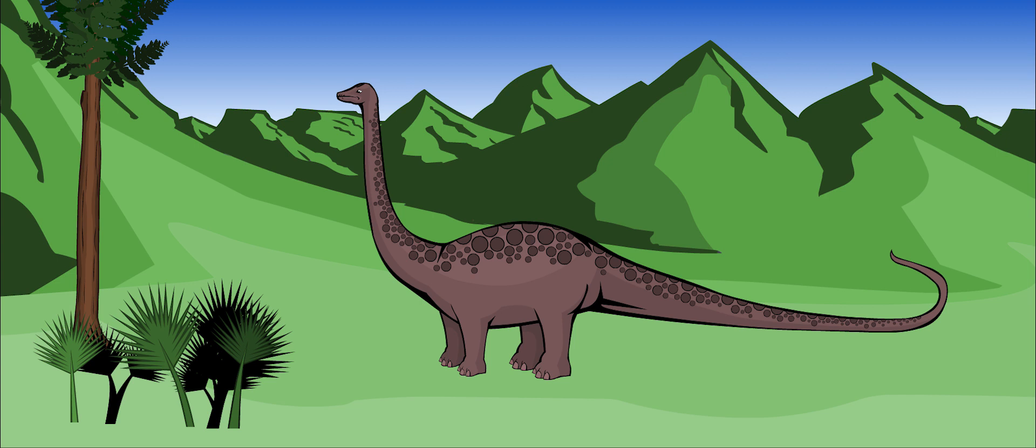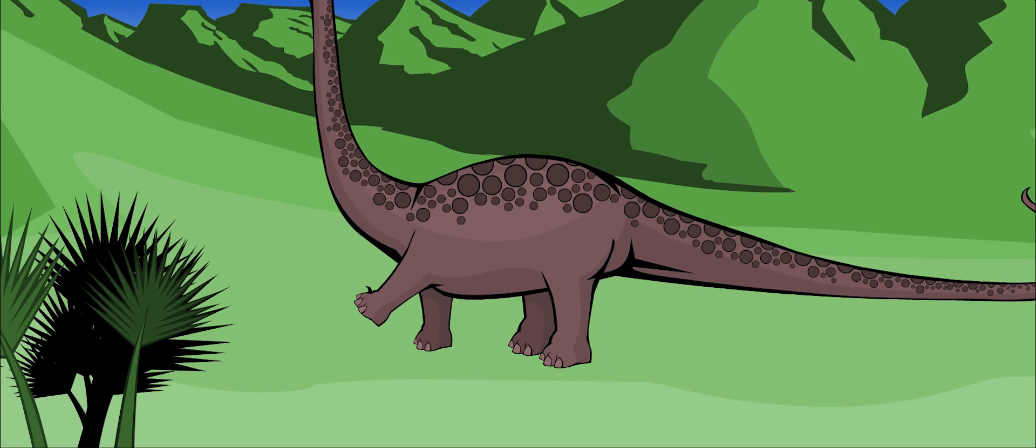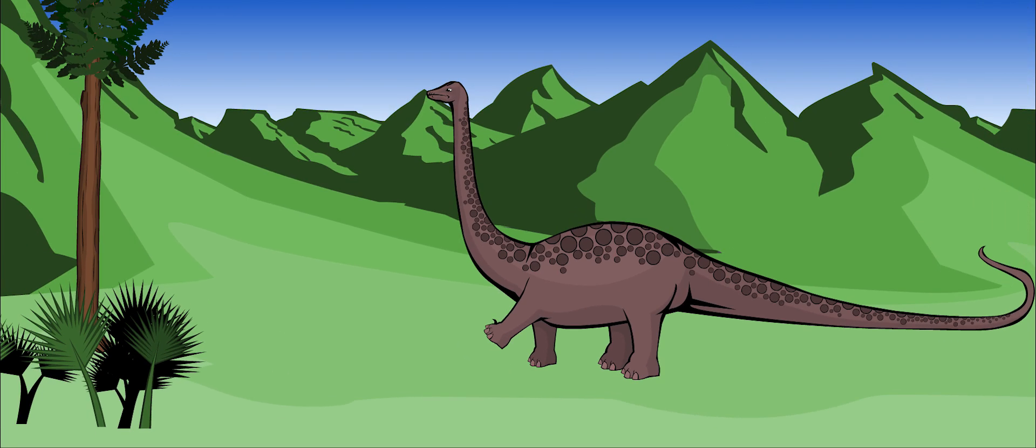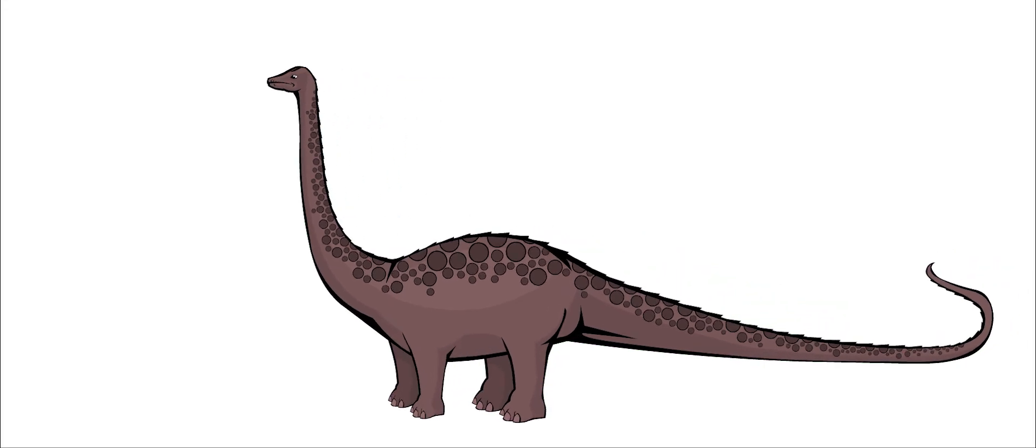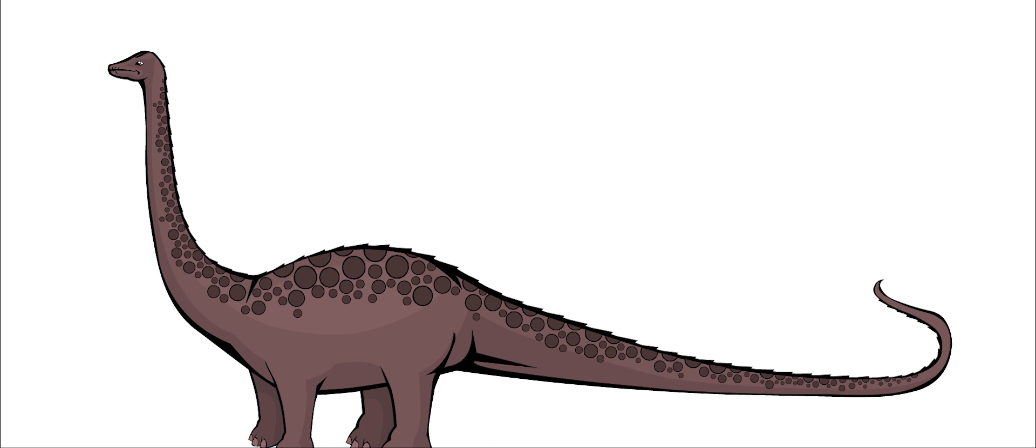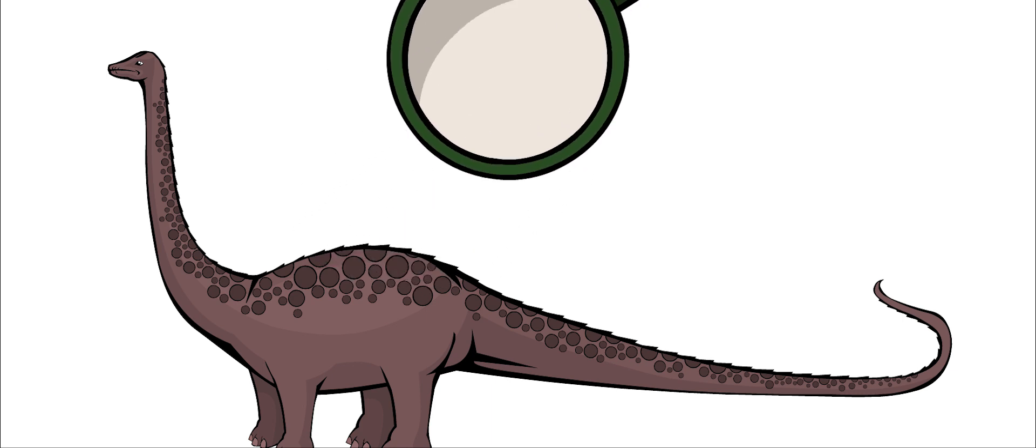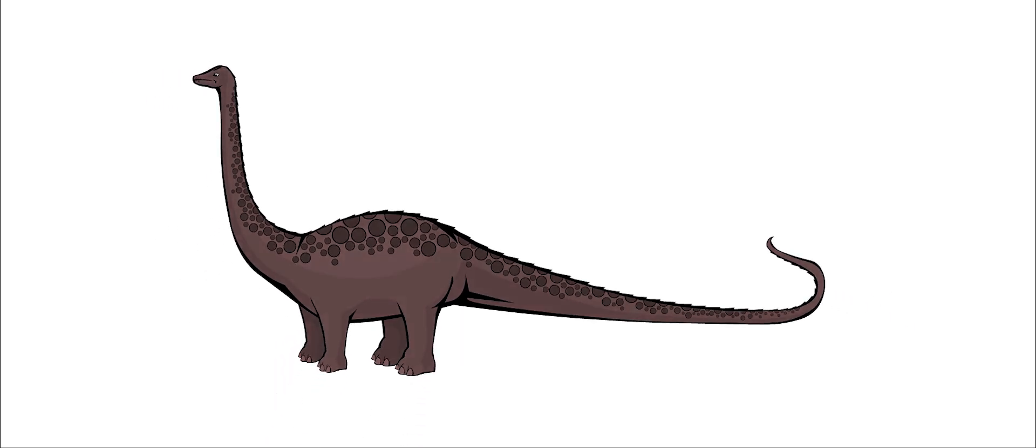It had five elephant-like toes on each big, round foot. Each foot also had a sharp thumb claw. This was probably used to defend against predators. From fossils, we have learned that Diplodocus had a row of small spikes running down its back. This was useful protective armor for these large creatures.